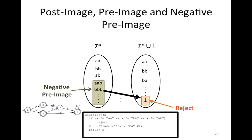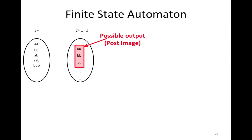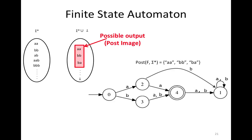The automata is a finite structure that can represent certain types of infinite and finite sets, which we call regular sets or regular languages. This automata represents the post-image of the function given any input — the possible outputs of the function given any input. This is what we mean when we say the post of function f with sigma-star, and this is the set represented by this automata.